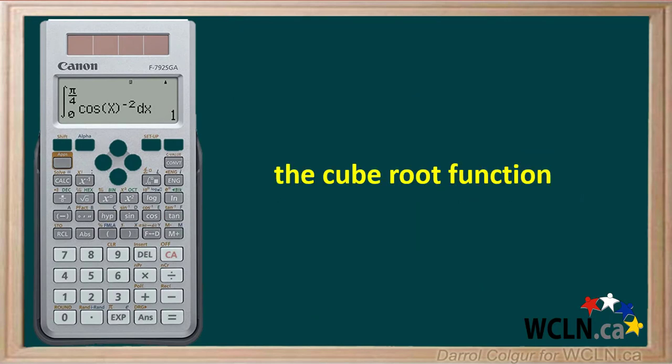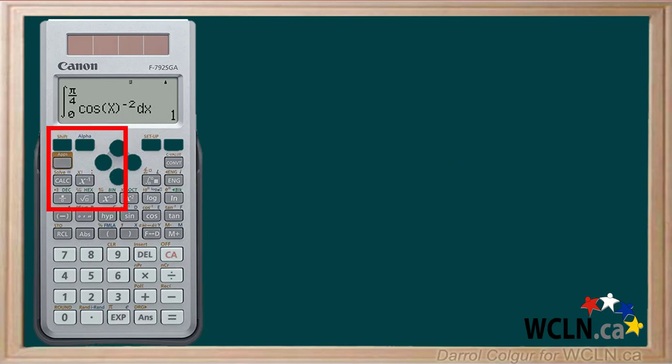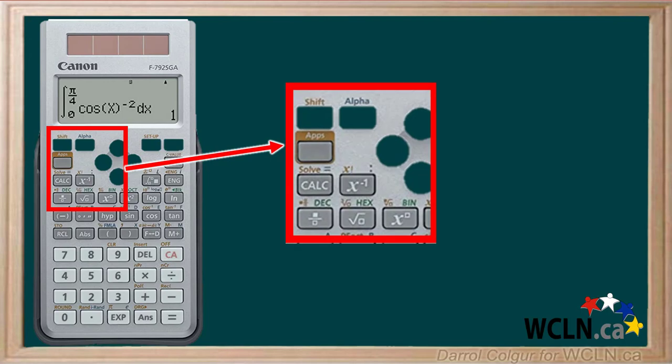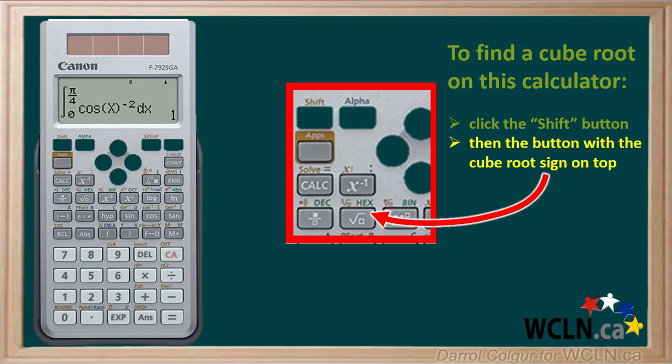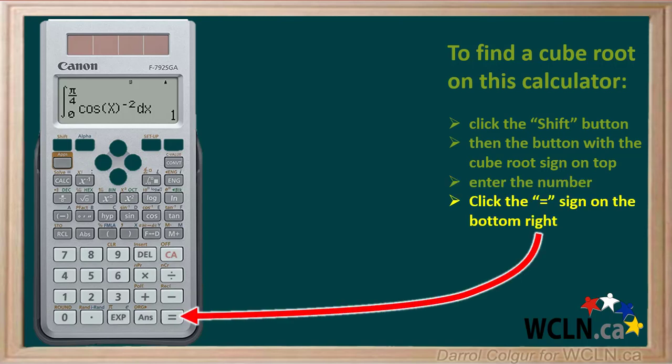The cube root function is right above the square root button. We'll zoom in a bit on this area. To find a cube root on this calculator, first click the shift button, then enter the number you want to find the cube root of, followed by the equal sign on the bottom right.